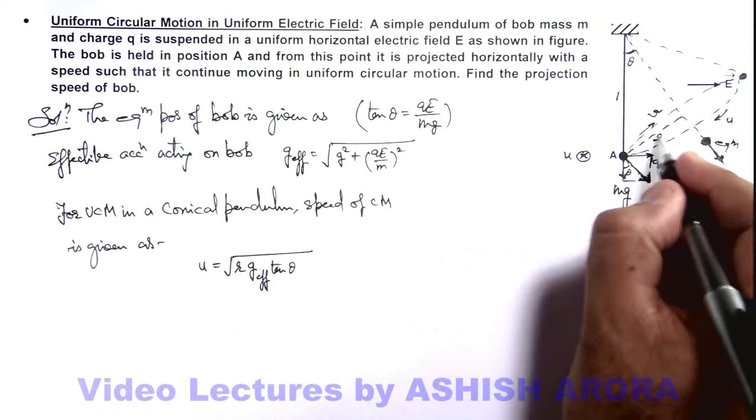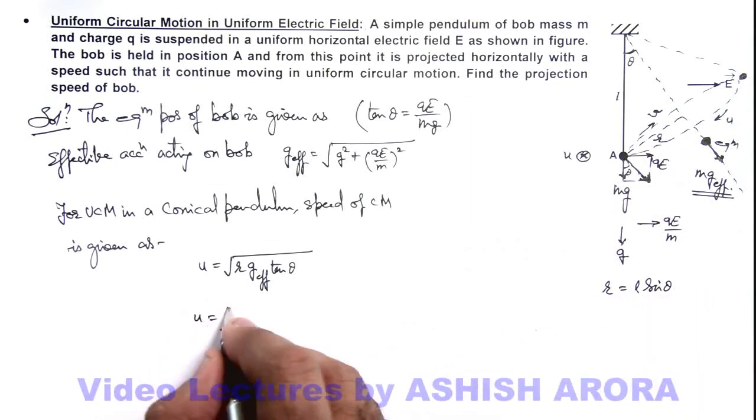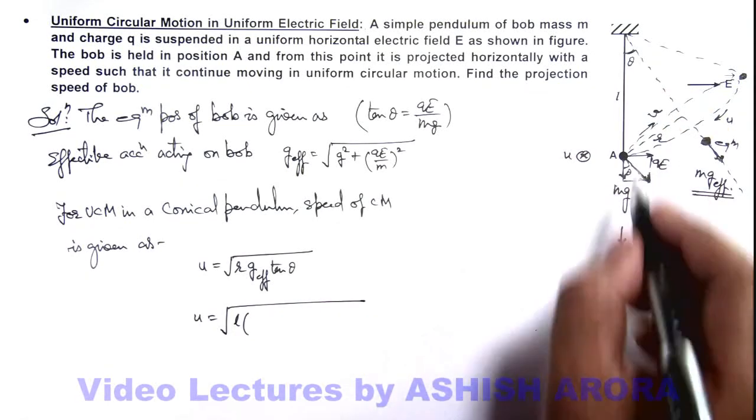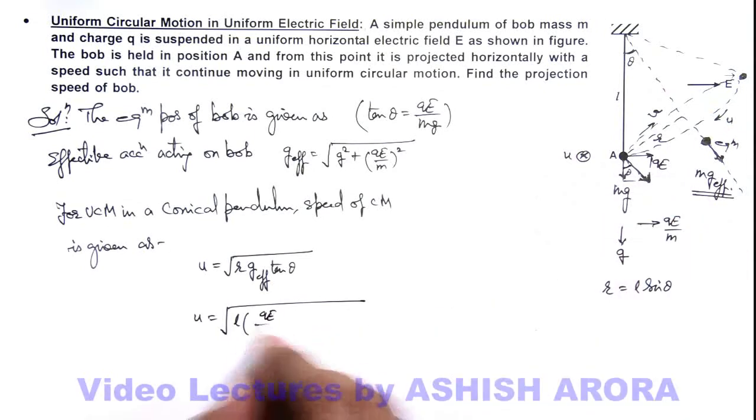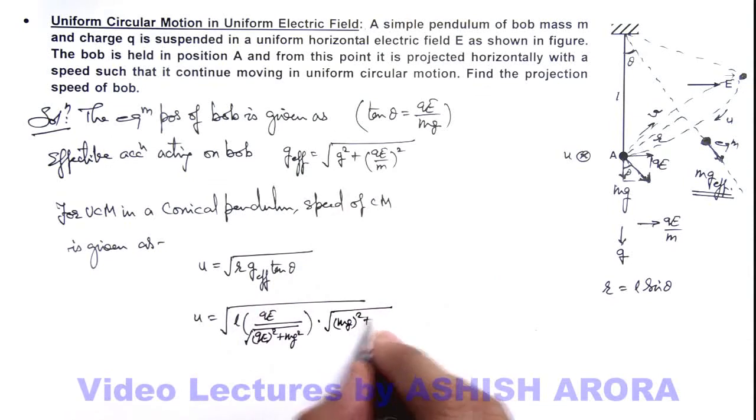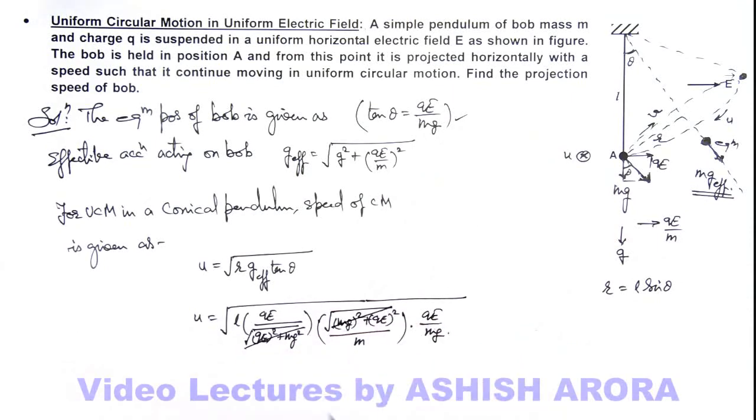Where r is the radius of the circular motion, which can be given here as L sin(theta). So if we substitute the values, this u will be square root of the value of r we can write as L sin(theta). And the value of sin(theta) from this triangle we can directly write as sin(theta) equals qE divided by square root of (qE)² plus (mg)², multiplied by g_effective we can write as square root of (mg)² plus (qE)² divided by m, multiplied by tan(theta) we already calculated as qE over mg. So in this situation this gets cancelled out. The final result we are getting is here (qE)² can be taken out of the sign of root, and m can also be taken out multiplied by square root of L by g. That'll be the final result to this situation.